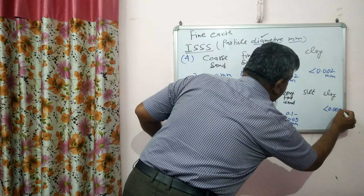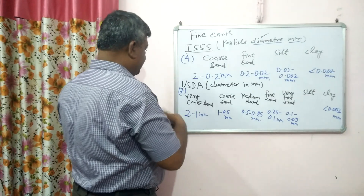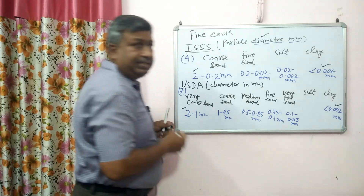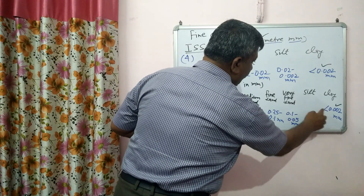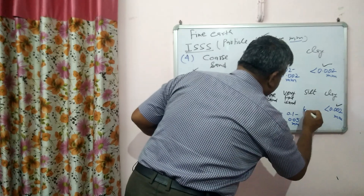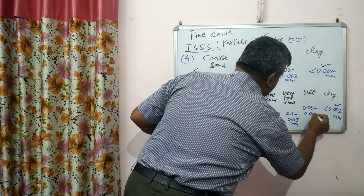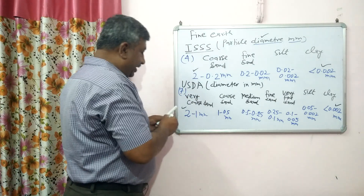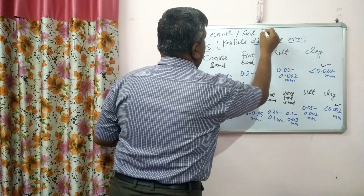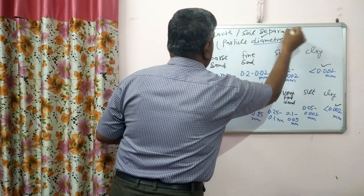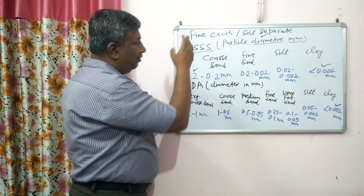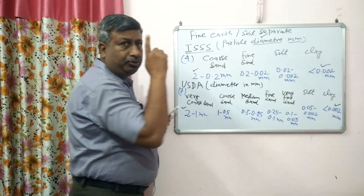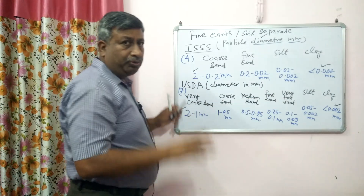In the USDA system, clay is less than 0.002 mm — same as ISSS. And silt ranges from 0.05 to 0.002 mm. So the difference between the two systems is mainly in how sand is subdivided. Both start at 2 mm and end at less than 0.002 mm for clay. This is the way we classify fine earth or soil separates, also called fine soil minerals.